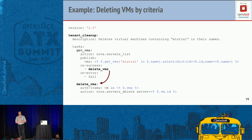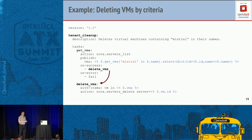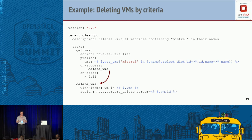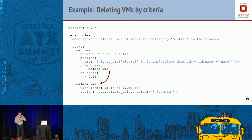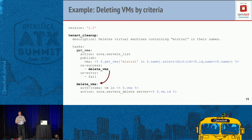Here is a real example of a Mistral workflow — you can write this and feed it to Mistral and it will work. This example is called 'tenant cleanup.' It has two tasks: the first gets VMs from a tenant based on some criteria — a YAQL expression filters VMs that have the word 'mistral' in their name, building a collection. The second task, 'delete VMs,' iterates over that collection and deletes all matching VMs.